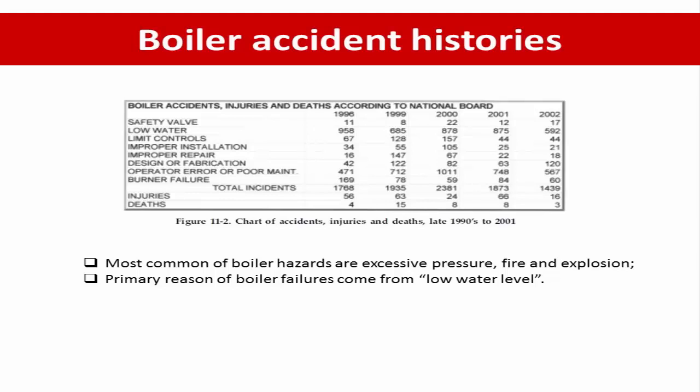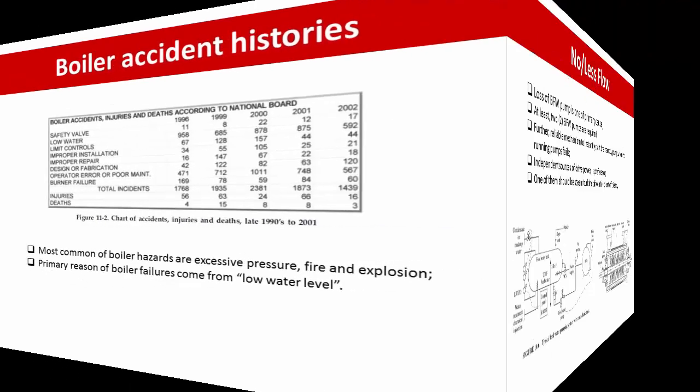Low water level leads to the water level falling low, which can cause the tube to deform and eventually explode. The primary reason for boiler failure comes from the low level, and it shows that about one-third of boiler accidents are caused by low water level.